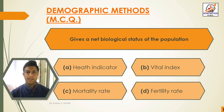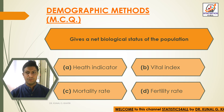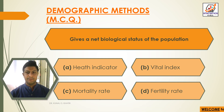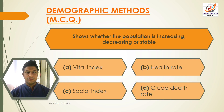Which option gives a net biological status of the population? Option A: health indicator, Option B: vital index, Option C: mortality rate, and Option D: fertility rate. The answer is Option D — fertility rate — which gives a net biological status of the population.